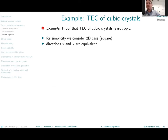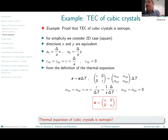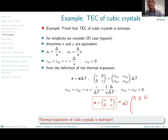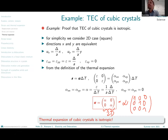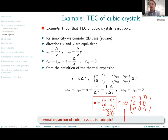An interesting consequence worth realizing is that the thermal expansion of cubic crystals is isotropic. Essentially, there is just one single number, alpha, which represents the thermal expansion of cubic materials, multiplied by a unit matrix in three dimensions. So to describe the thermal expansion of a cubic material — no matter how structurally complex, whether simple FCC, rock salt, diamond structure, and so on — as long as the system is cubic, the thermal expansion is isotropic and fully determined by that one single number.